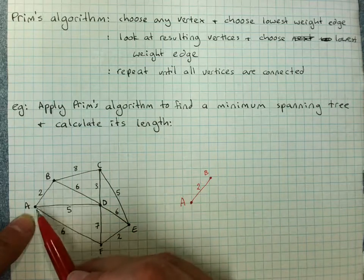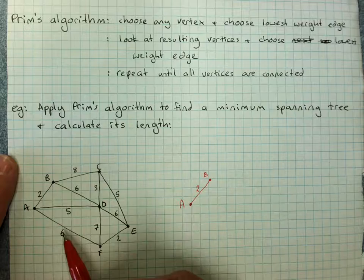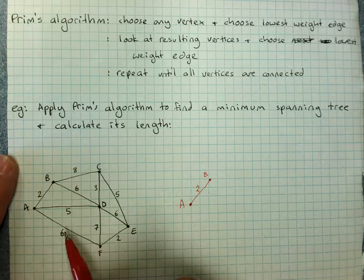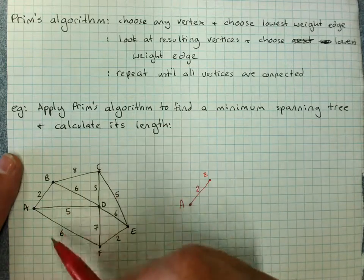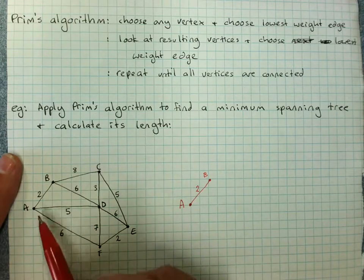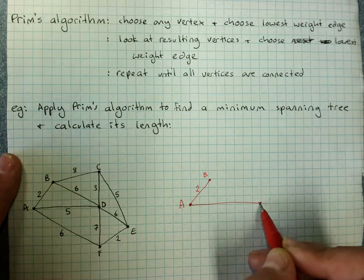Now I've got A and B involved. And I look at all the edges coming off A and B: 8, 6, 5 and 6. Choose the lowest weight edge out of all those four options. So that will be A and D at 5. So I'll put in D.